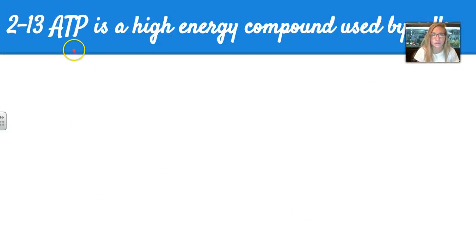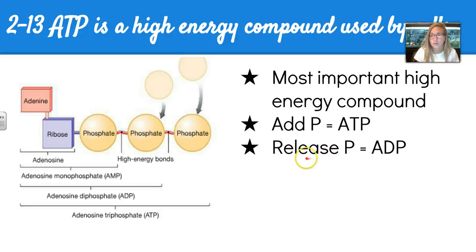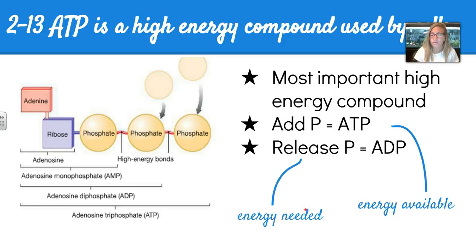Section 2.13 talks about ATP, a high-energy compound used by cells. ATP is made of adenine, ribose (a sugar), and three phosphate groups. It is the most important high-energy compound. When we add a phosphate, we get ATP — like a stored battery. When we release a phosphate, we get ADP, meaning energy was needed and utilized.